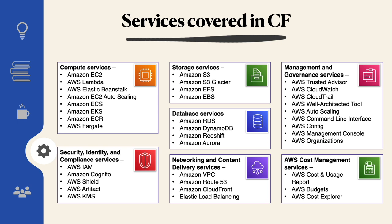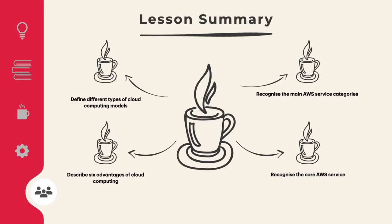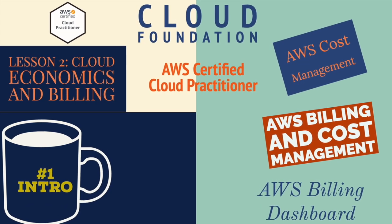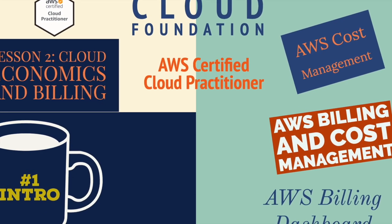For security and identity we look at AWS IAM, Amazon Cognito, AWS Shield, AWS Artifacts, and AWS KMS. The key takeaways from this lesson: we defined different types of cloud computing models — all-in-the-cloud, hybrid cloud, and private cloud. We recognized the main AWS core services: networking, storage, database, and compute. We described six advantages of cloud computing. Thank you for watching, and see you in Lesson 2: Cloud Economics and Billing.